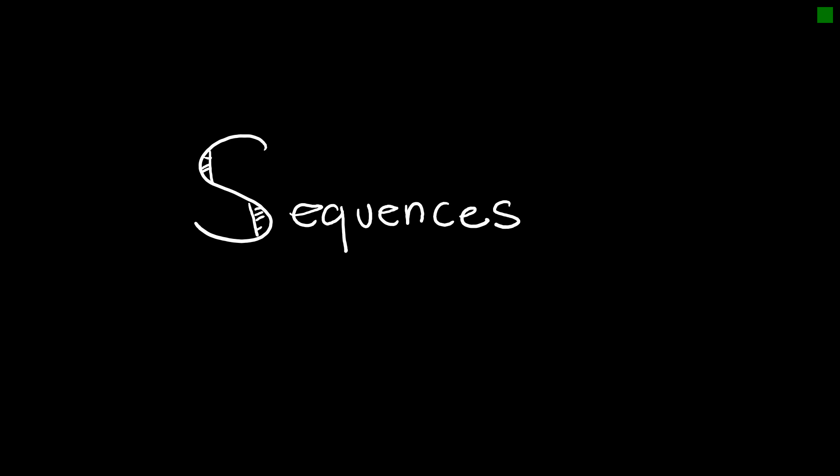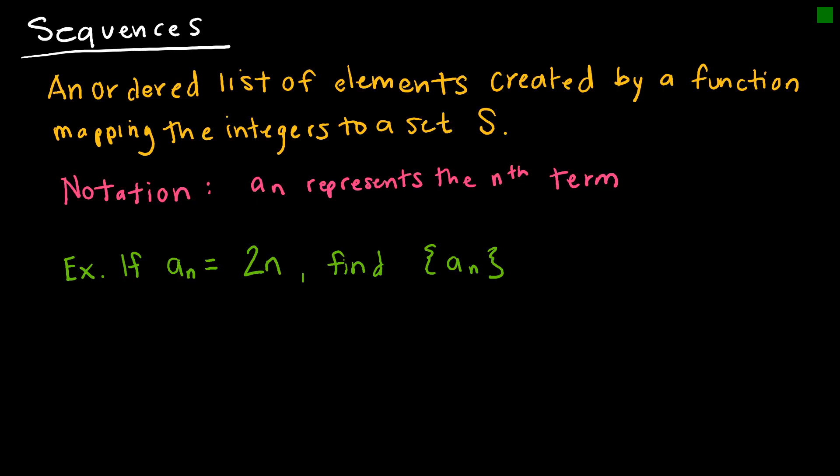In this video we will talk about sequences. A sequence is an ordered list of elements, so the order is important here because essentially we're going to be looking for some sort of pattern. An ordered list of elements created by a function that maps the integers to a set S. So we don't know what's in S but we get the idea.